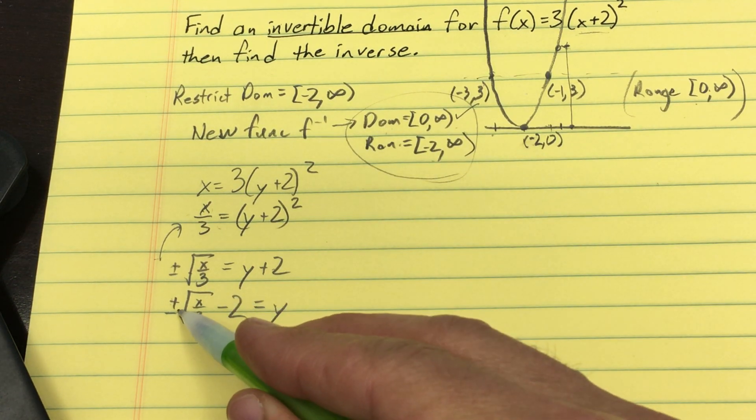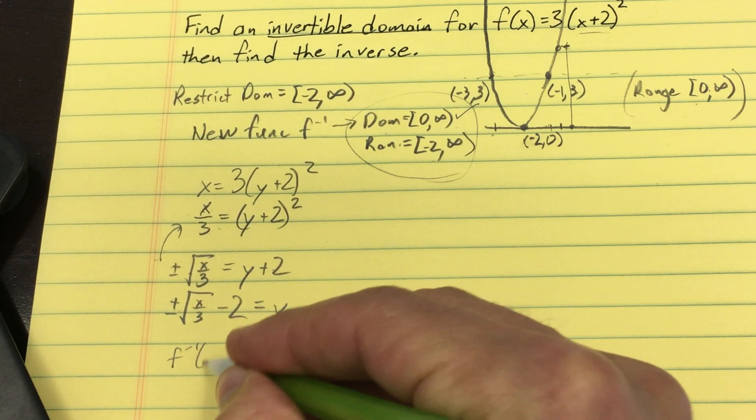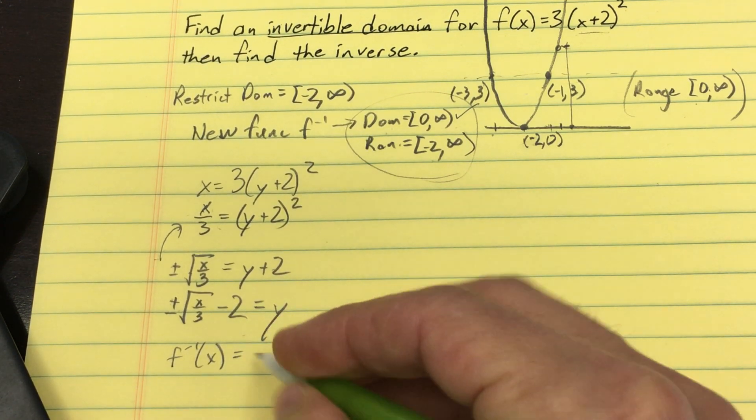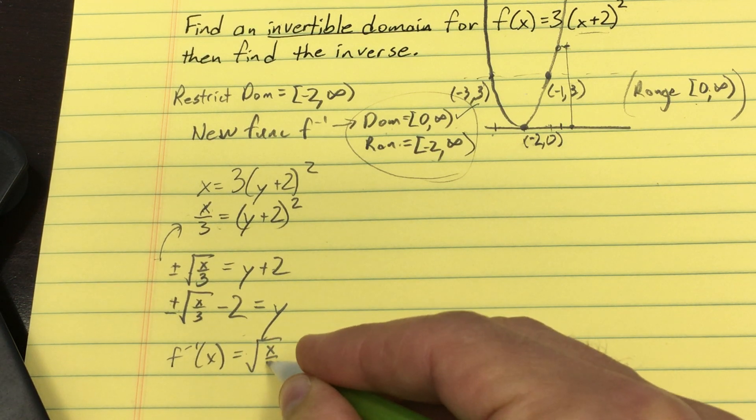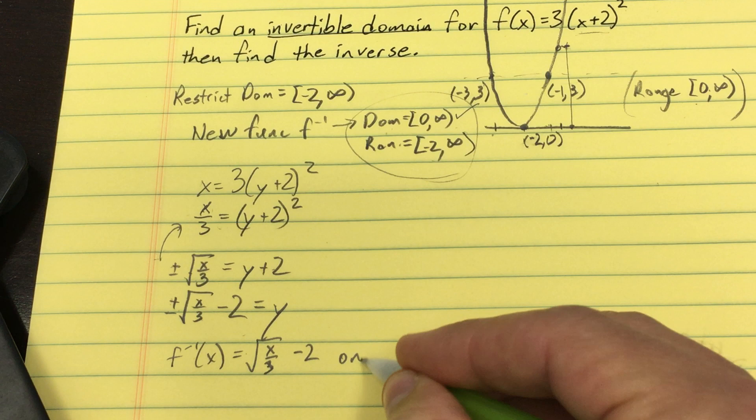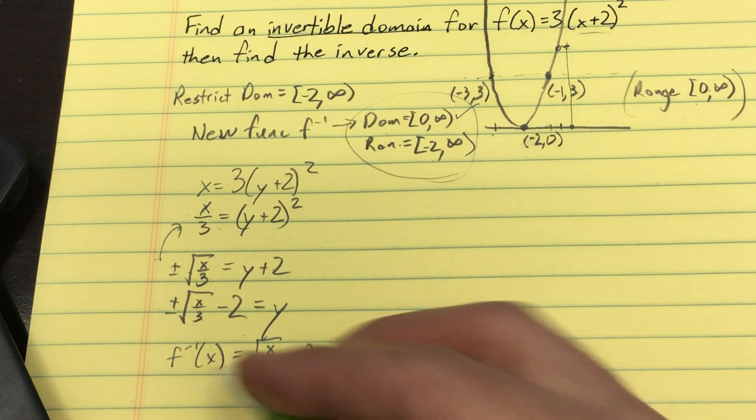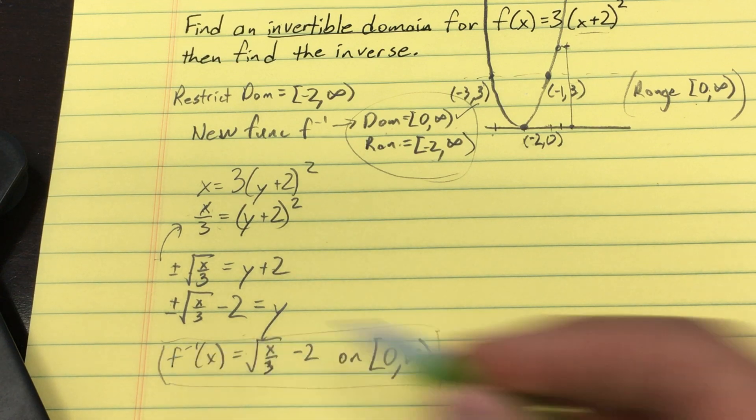But which of these will make sure that I don't get an output below -2? Well, clearly, it's the positive one. So I'm going to have f⁻¹(x) is the square root, positive, the square root of x/3 minus 2, on the interval [0,∞). That's my answer.